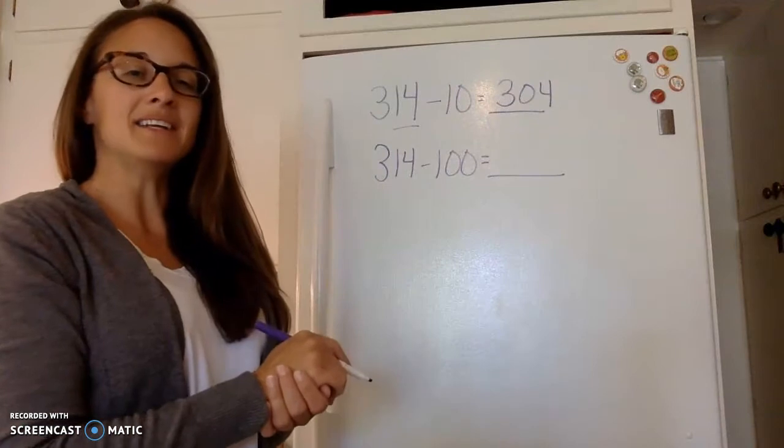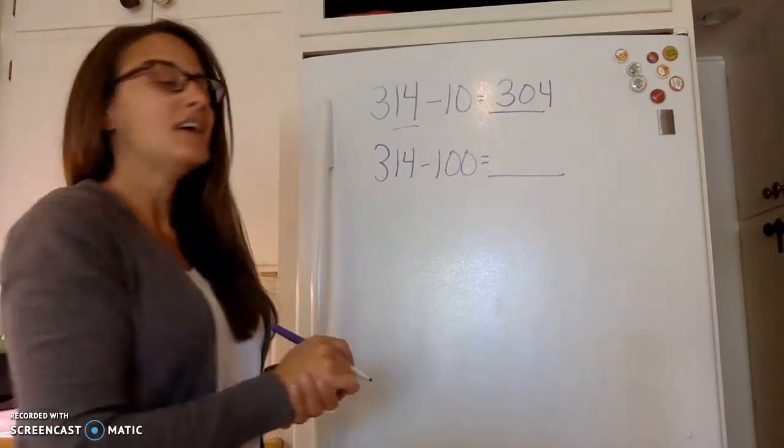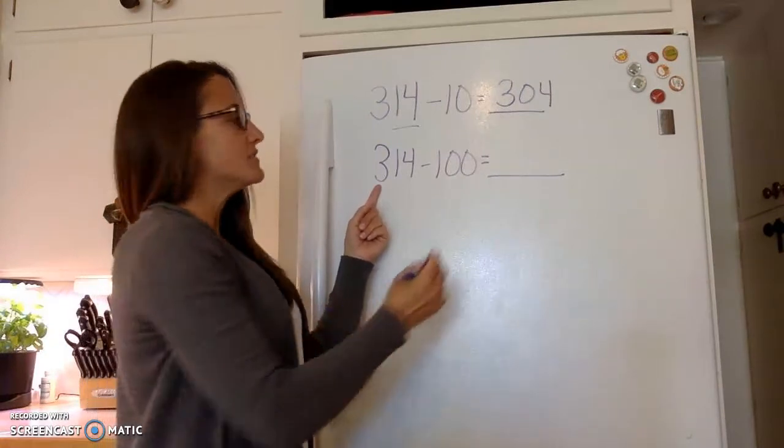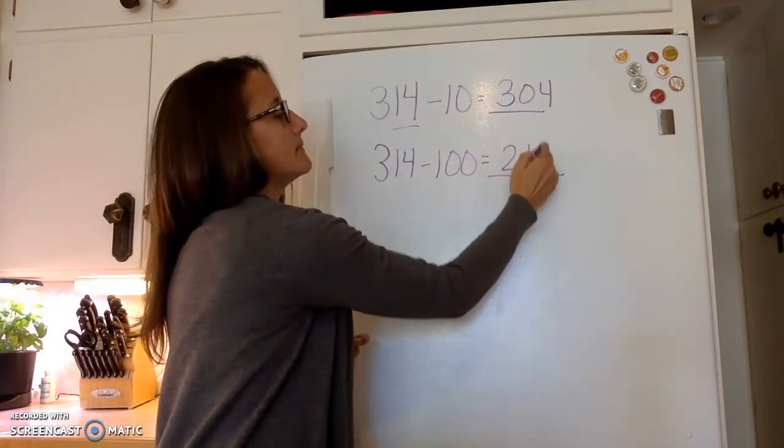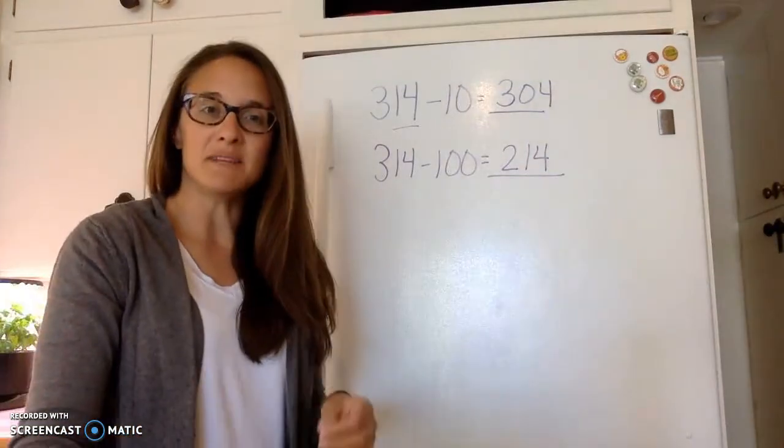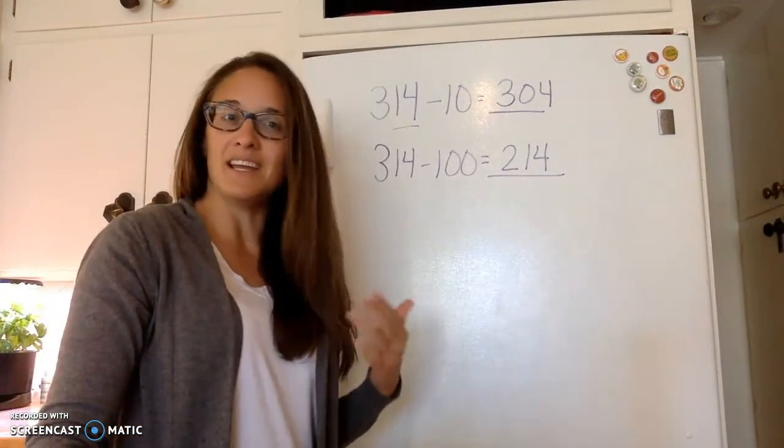Okay, 314 minus 100. We're going to be looking at the hundreds place. 314 minus 100 would take us back to two hundreds, 214. So I want you to try as many of these as you can doing them mentally in your mind.